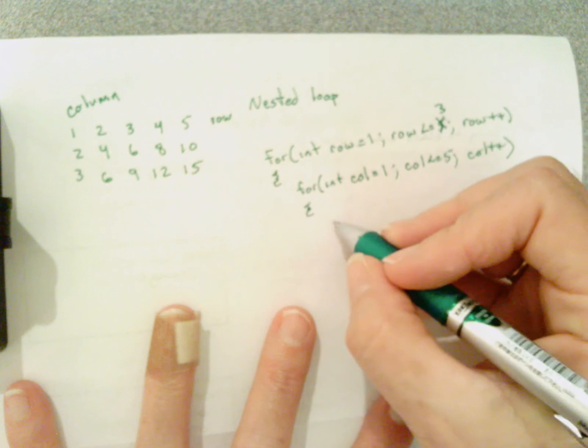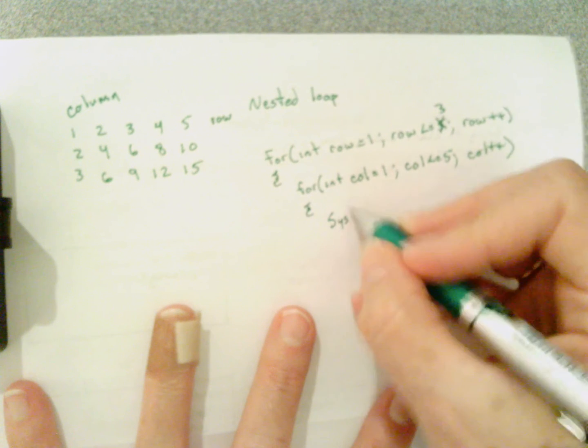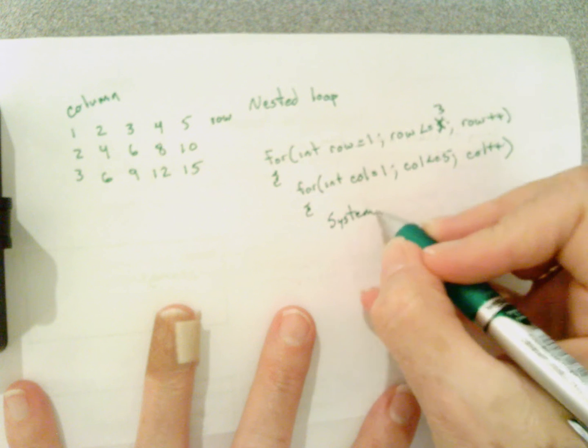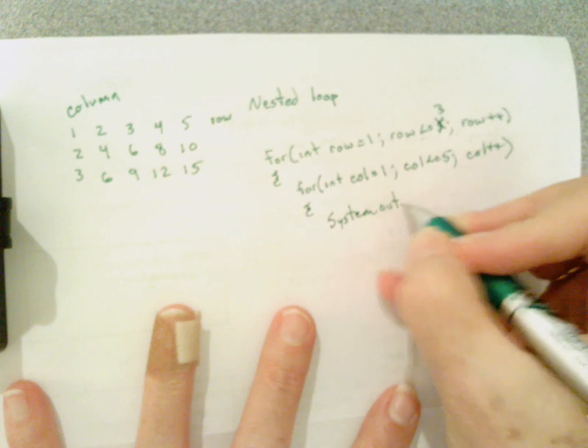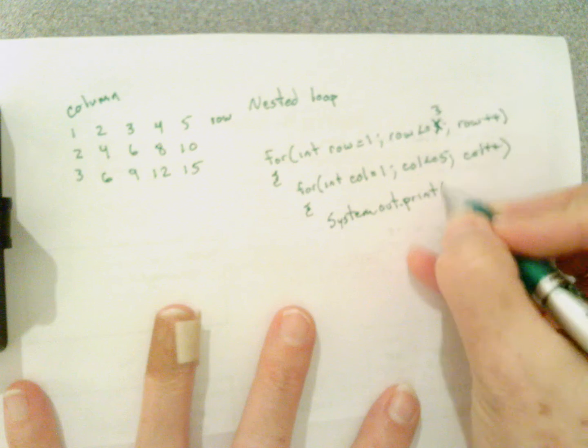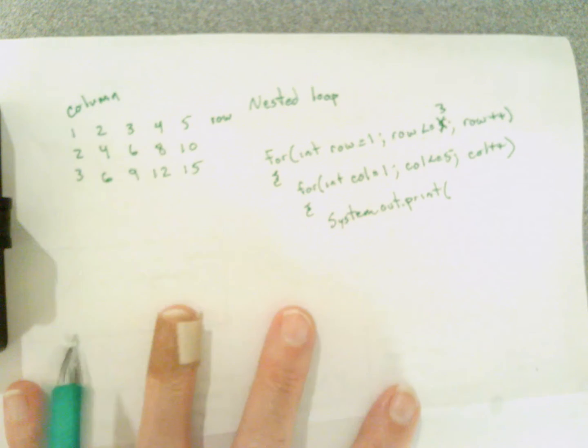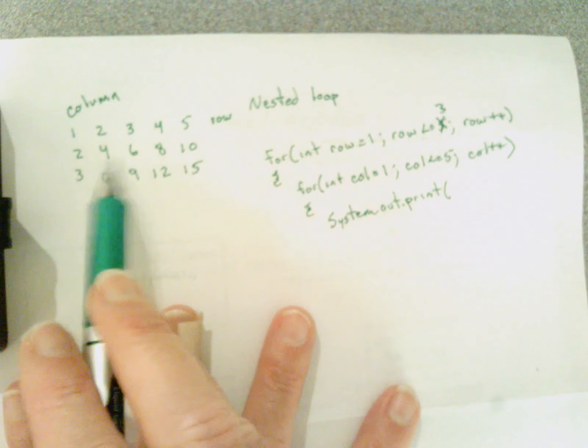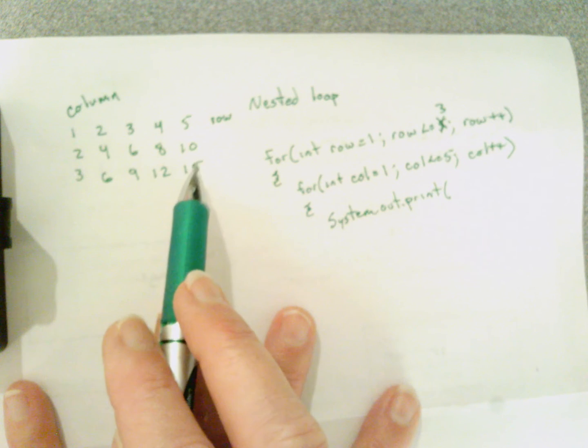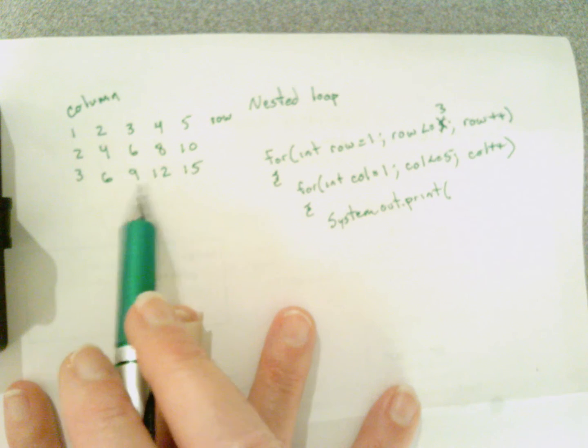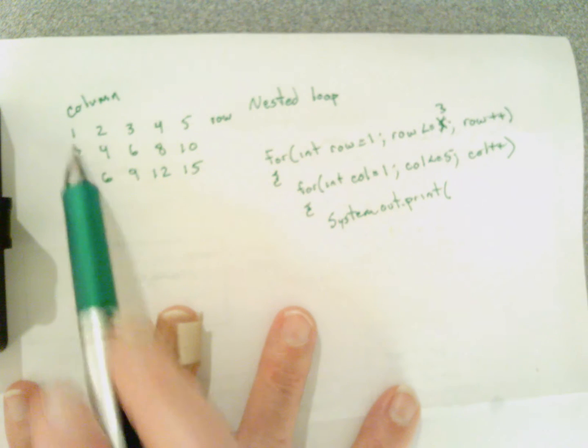Inside my for column loop I want to have a print statement: system.out.print. How am I going to get one two three four five to print on the first row, two four six eight ten to print on the second row, and three six nine twelve fifteen to print on the third row?